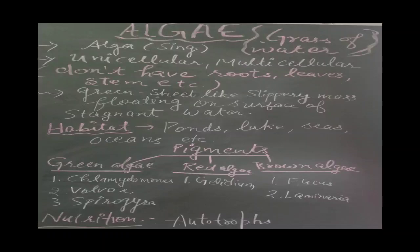You can see a green sheet — that is algae. Algae habitat is mostly in ponds, lakes, seas and oceans. Pigmentation is divided into three categories: green algae, red algae and brown algae. Examples of green algae are Chlamydomonas, Volvox and Spirogyra.